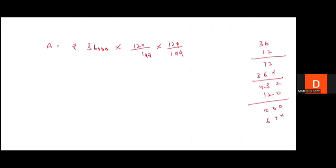100 plus 20 raised to the power 2. Then amount is equal to rupees 36,000 × (120/100) × (120/100). Cancel it, so 36 × 12. Answer: 51,840. So amount would be rupees 51,840.